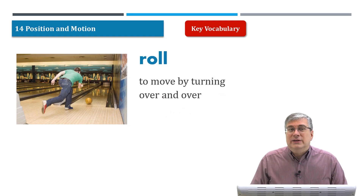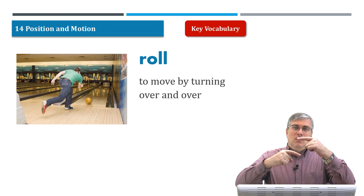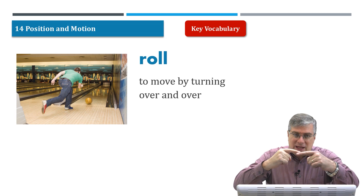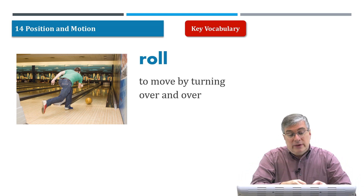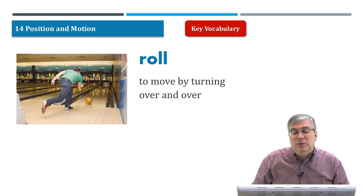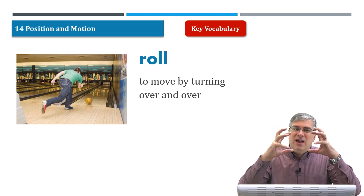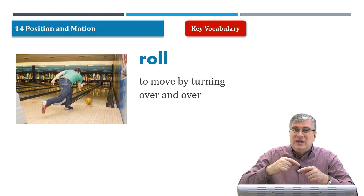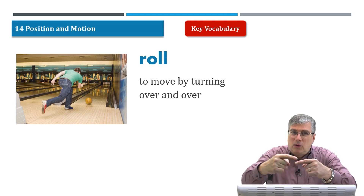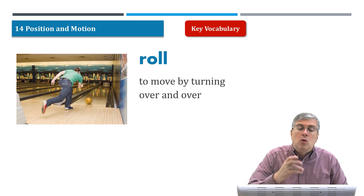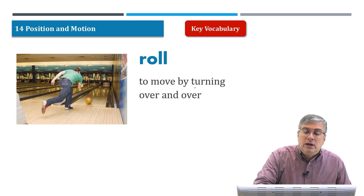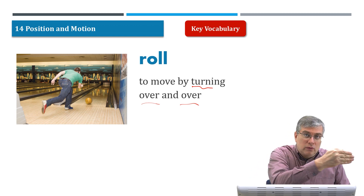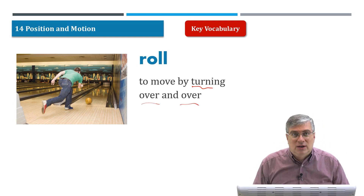Roll means to move an object by making it turn over and over — rotating so it rolls in a direction. This is a picture of bowling. You have a big heavy bowling ball, and you throw it down towards the pins. As the ball moves down the floor, it is rolling. It will turn over and over as it moves in a certain direction.